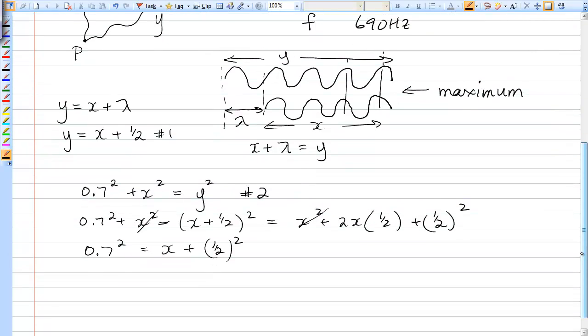So it's pretty easy to get X in that situation. X would be equal to 0.7 squared minus 1 half squared. And if you put that into your calculator, you get that X equals 0.24 meters. So it's quite close to that top speaker that you get the first maximum.